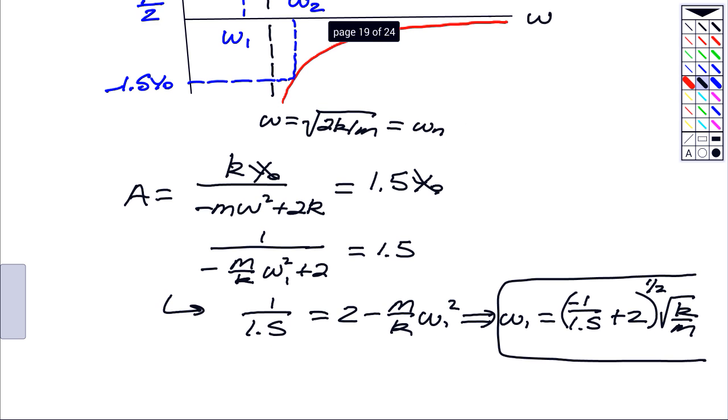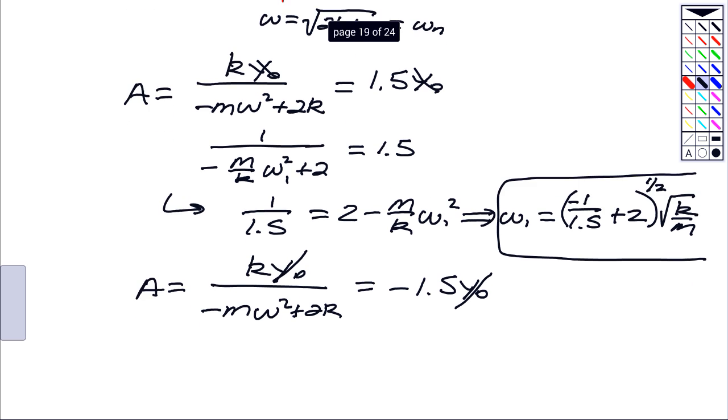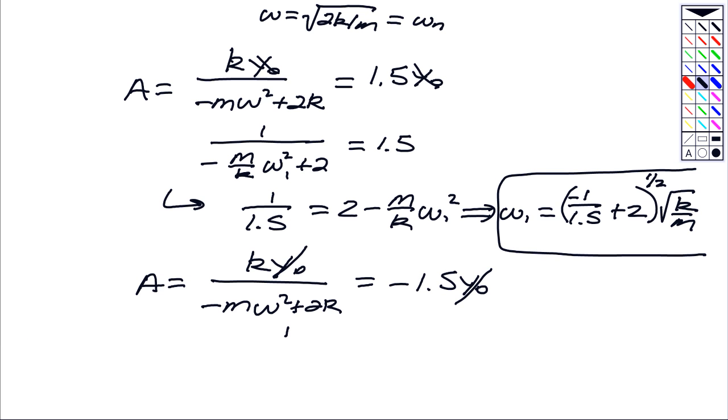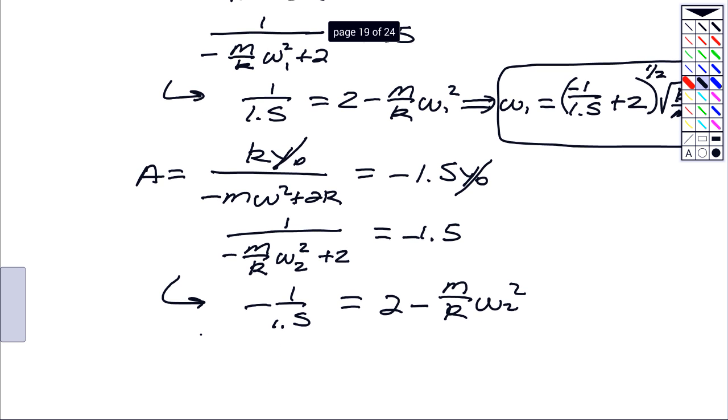We also want to make A equal to minus 1.5 Y naught. So this is K naught minus M omega squared plus 2K equal to minus 1.5 Y naught. Of course, the value of Y naught will cancel out. So what we have here on the left-hand side is 1 divided by minus M over K omega 2 plus 2 is equal to minus 1.5. So I do the same solution idea that I did before. Minus 1.5 on the left side is equal to 2 minus M over K omega 2 squared. So omega 2 then is equal to 1.5 plus 2 omega 2 squared.